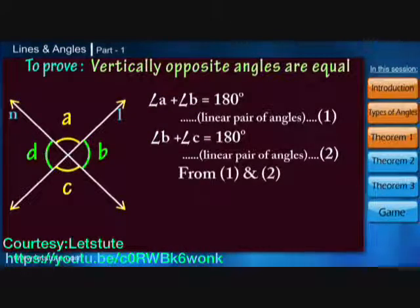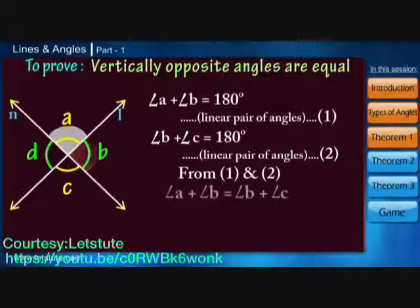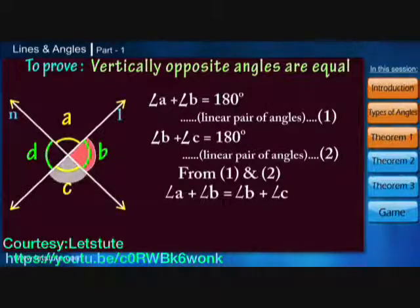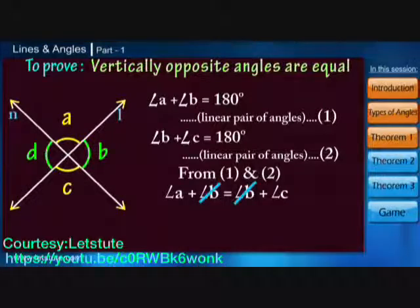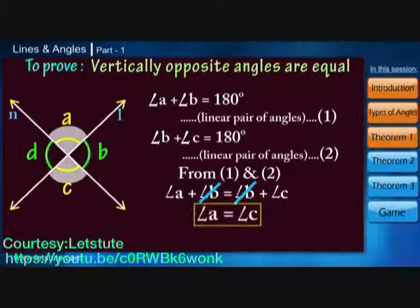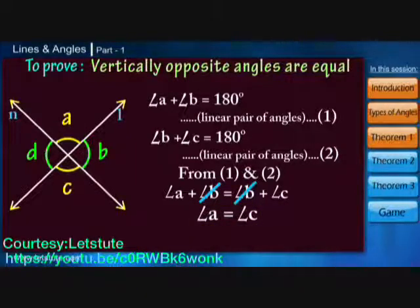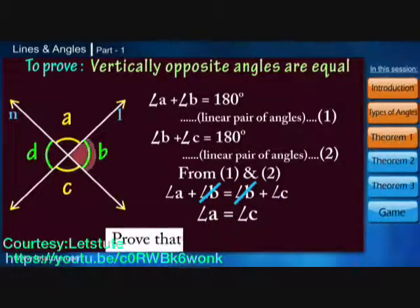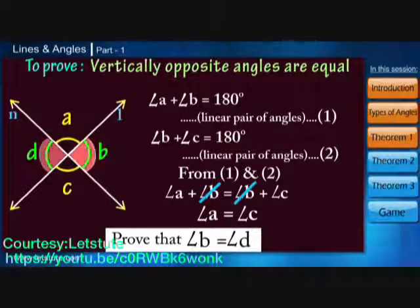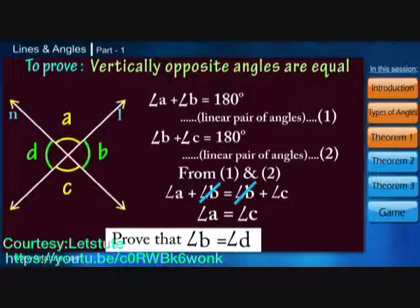From equations one and two: angle A plus angle B equals angle B plus angle C. If we subtract angle B from both sides, we get angle A equals angle C. Similarly, you can prove that angle B equals angle D. This proves that vertically opposite angles are equal to each other.